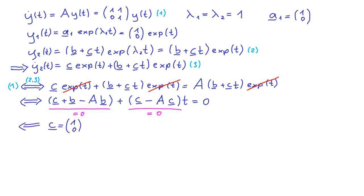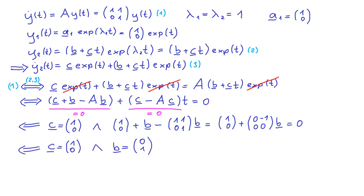If we now insert this c and the matrix A from above into the left expression we find, it is easy to see that b equals 0,1 is a possible solution to this second equation. Since b is multiplied with a matrix that has 0 in the first column, the first value of b is actually arbitrary. So instead of 0,1 you could use any other value in the first component and still 1 in the second component.